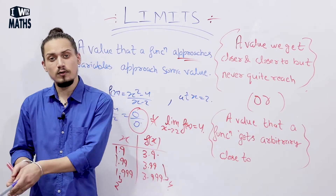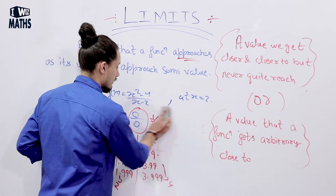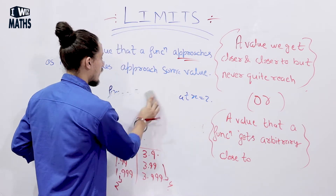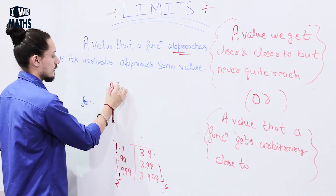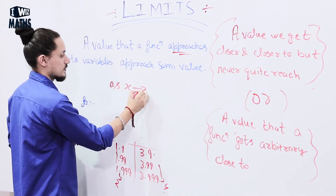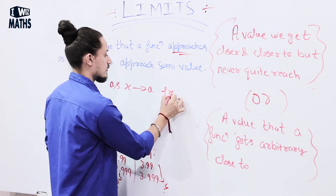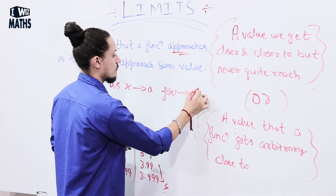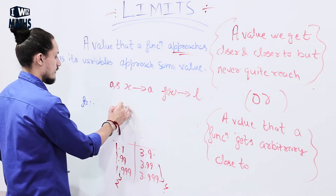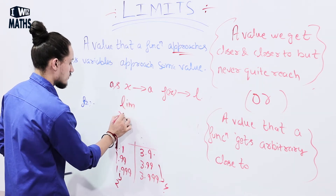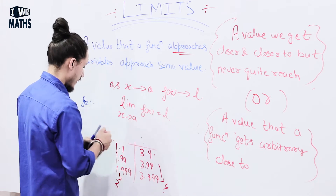I hope we were able to clear the concept of limits using these two examples. Now let's see how we write limits mathematically properly. If as x approaches a certain value 'a', f(x) approaches a certain value 'L', then L is called the limit of this function, and we write it as: lim (x → a) f(x) = L.